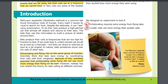Bats produce their calls at frequencies that are too high for humans to hear. If we could hear it, a bat's normal call would be as loud as a chainsaw, but they can shout to volumes as loud as a jet engine. In nature, bats sometimes shout over the calls of other bats.